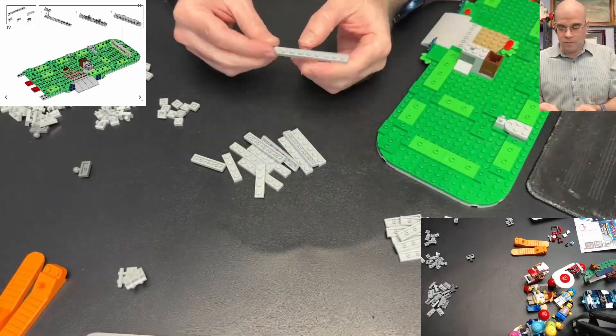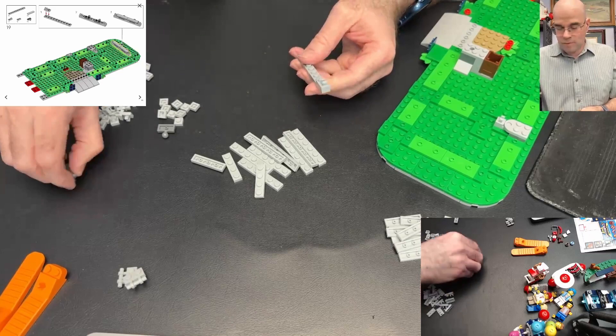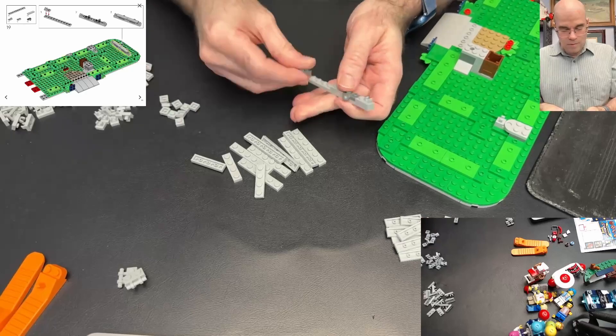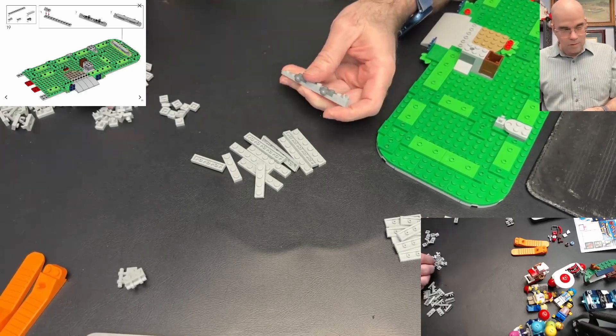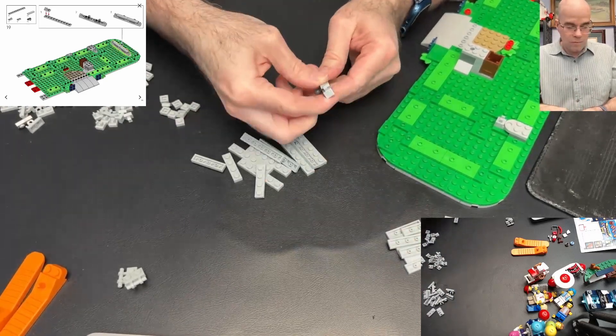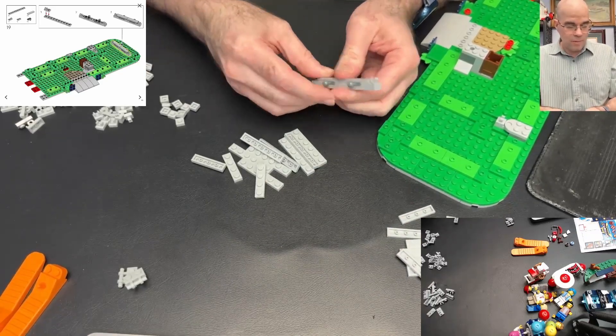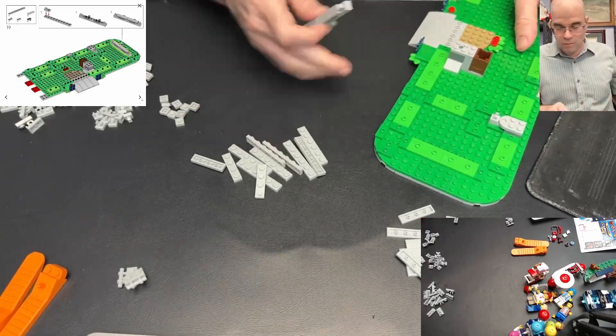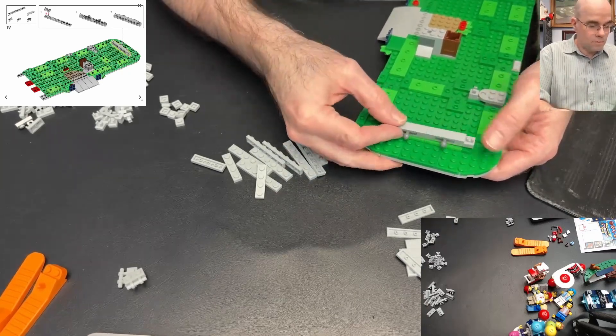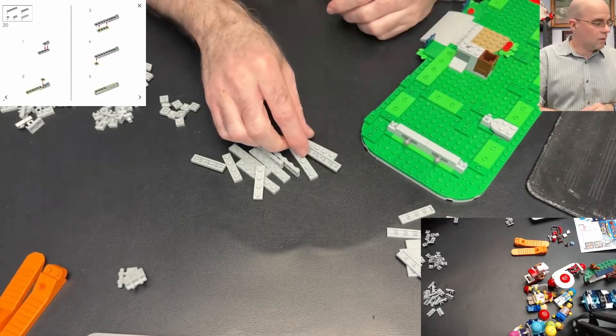Okay, now this 1x10 plate, some clips and ball joints. Really curious to see why the ball joints. And then we have two of these 1x4 tiles, got a whole bunch of them. And I got a whole bunch of these 1x6 plates as well. So this goes on there on these jumpers.